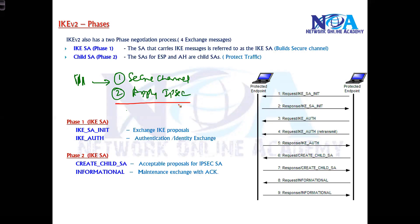Logically comparing that with IKEv2, here also we have a two-phase negotiation process — the same kind of phase one and phase two concept — but there is no exact phase one and phase two naming in IKEv2.